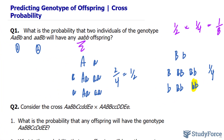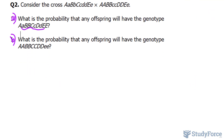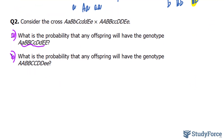Let's apply this logic to question two. This is a much more complicated situation — we have five genes that we're dealing with, labeled A through E. In the first of two questions, we want to know: what is the probability that the offspring will have the genotype shown here? We have to create five different monohybrid crosses for each of these genes, unlike the previous example where we had only two.